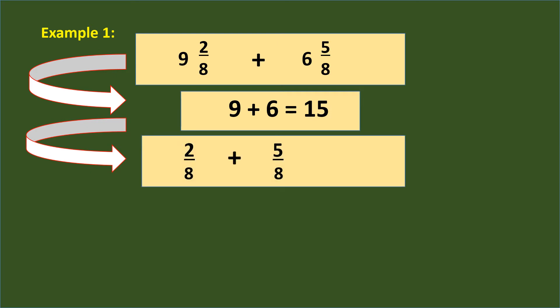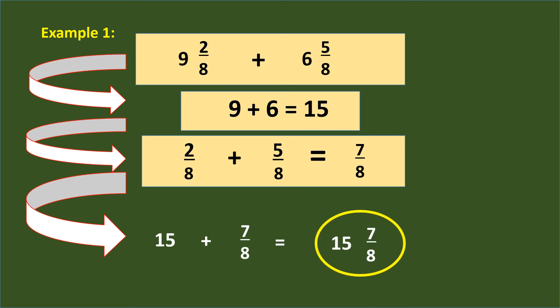Second, add the fraction part. So 2/8 plus 5/8 equals 7/8. Finally, combine the answer in whole numbers together with the answer in fraction part. So the final answer is 15 and 7/8.